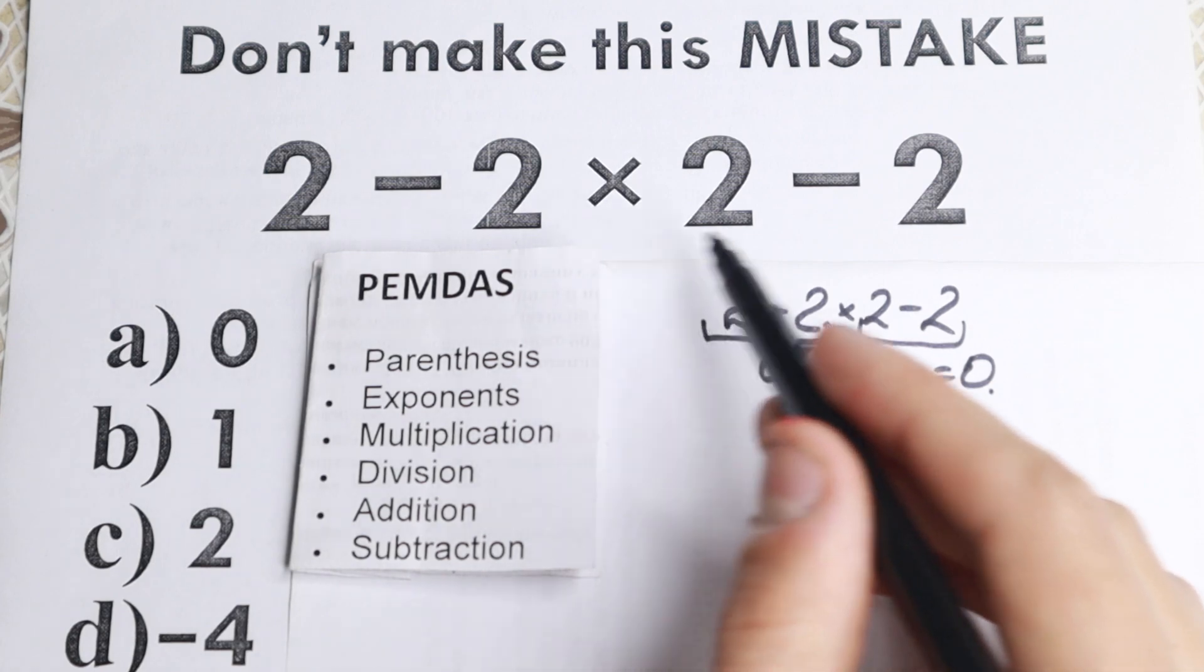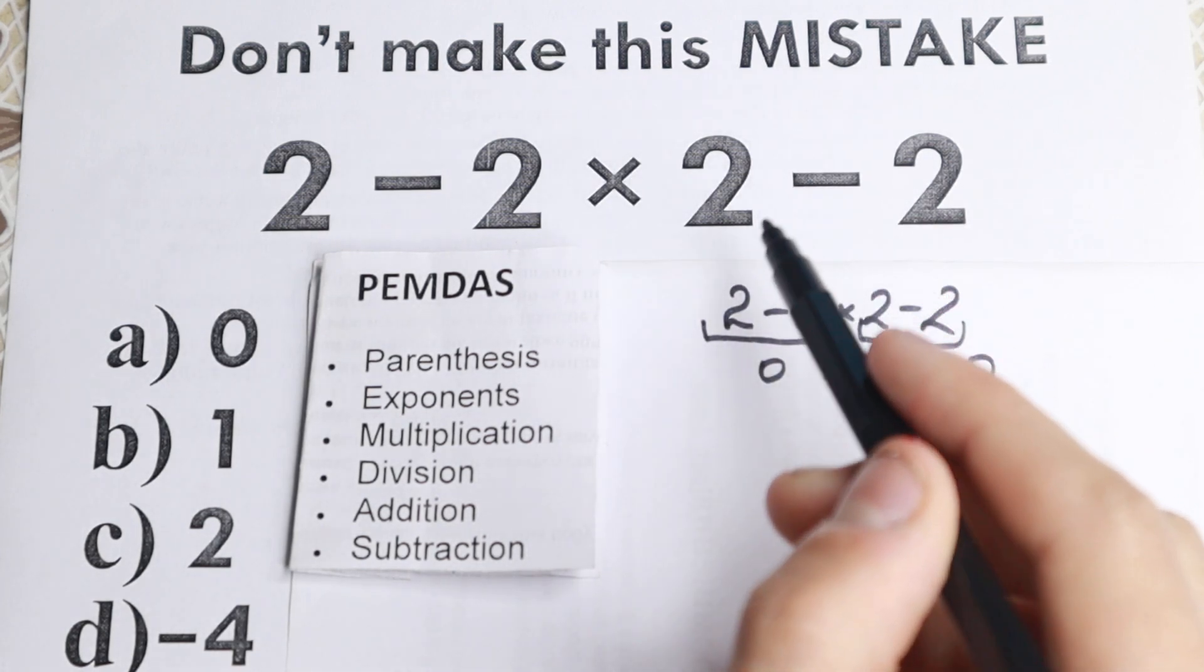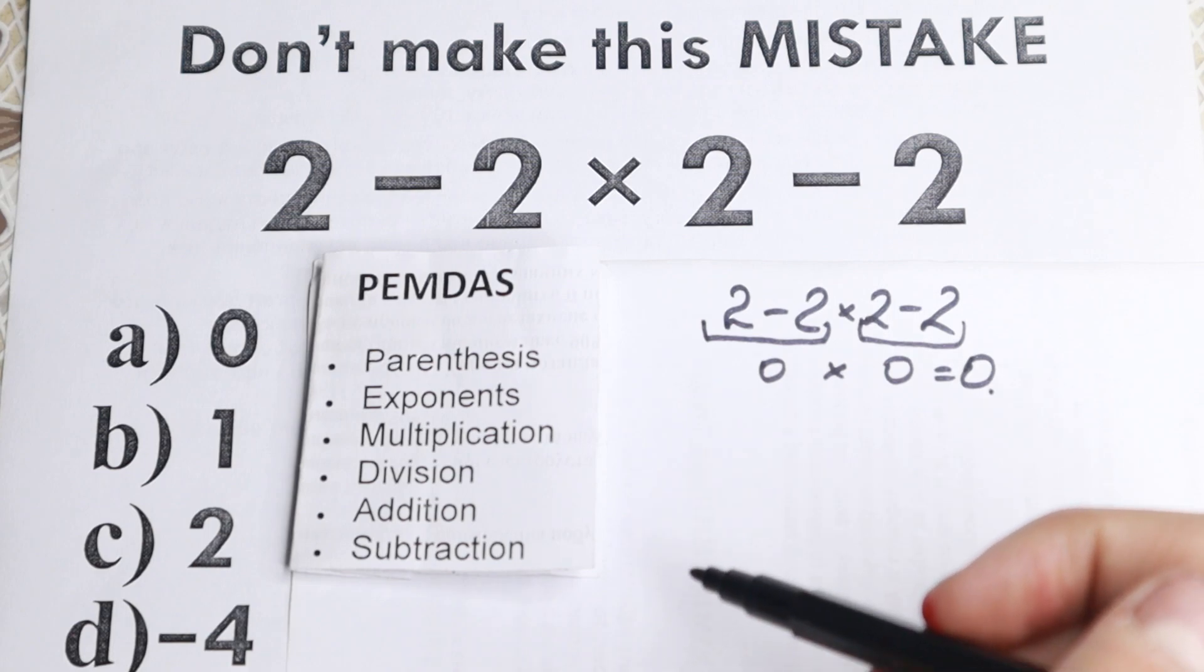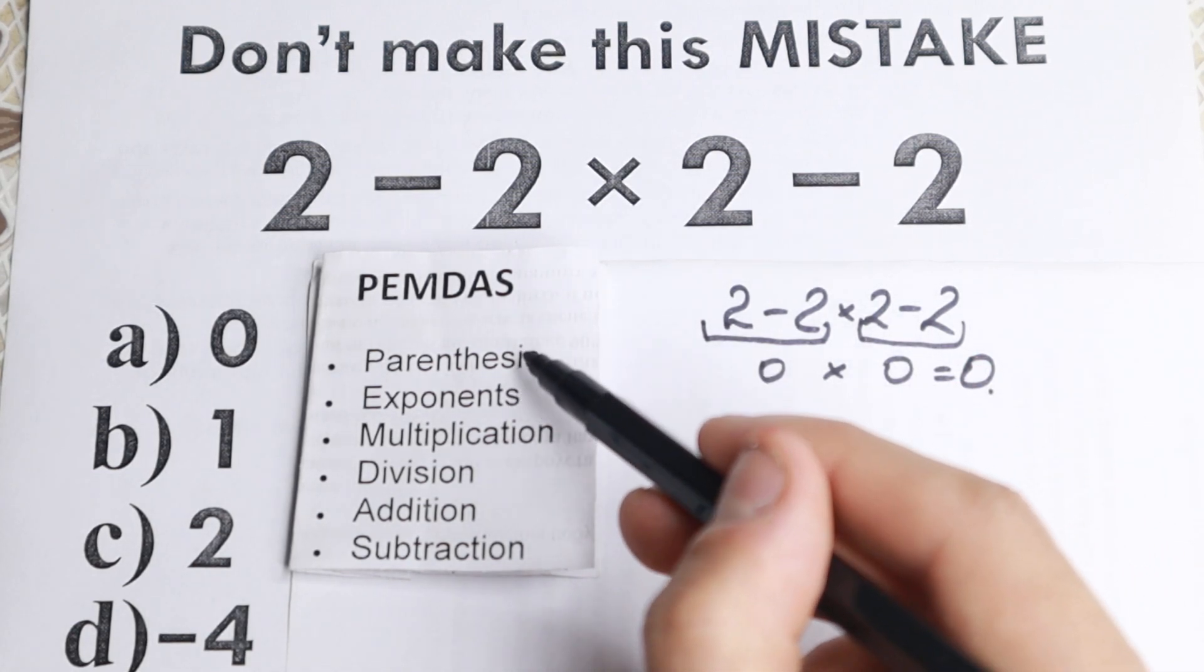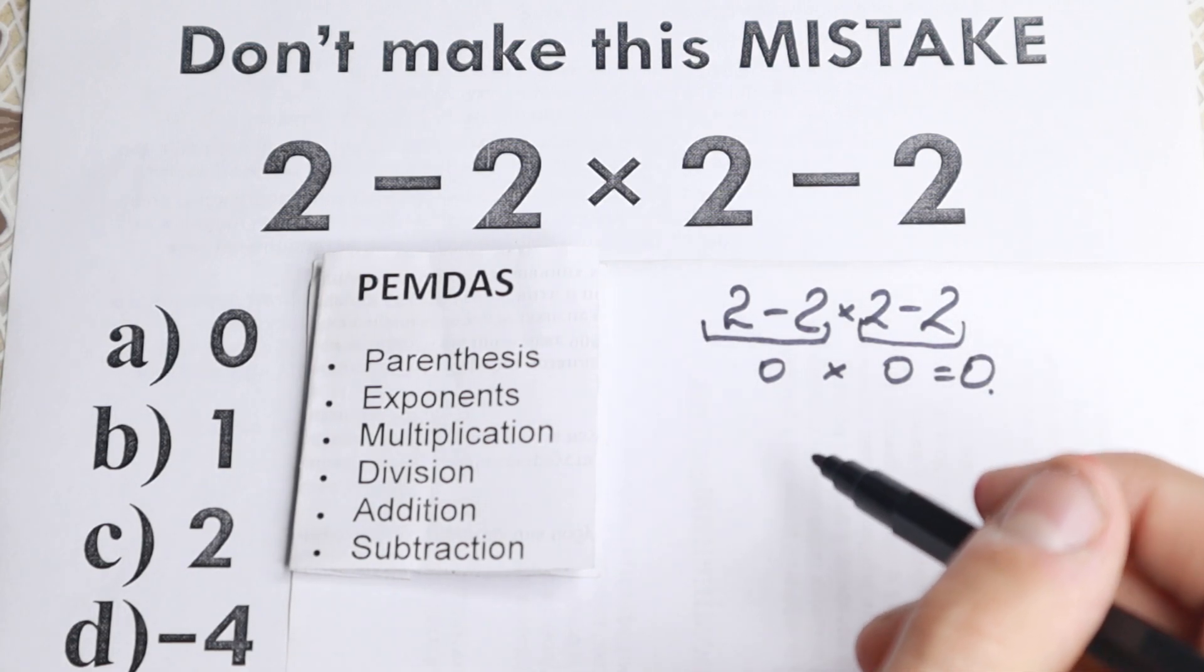OK, the next one, we have exponents. So do we see any exponents, any squares, any cubes right here? I don't see any of those. So we just skipped this part as well. And this is really great because maybe this is the main difficult part with parentheses and exponents. We just skipped this part right here.